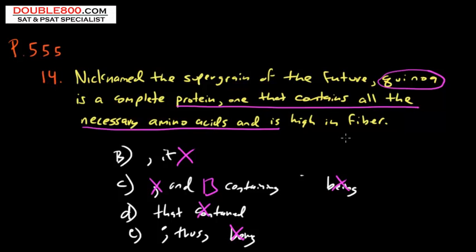So hopefully you've figured out that A, the way it's given, is correct. And I want you to remember this phrase and another phrase that is perfectly fine. If you have a subject, quinoa is a complete protein, comma, one that contains. Just remember this phrase: one that contains.